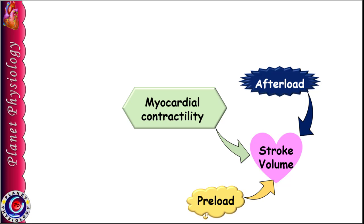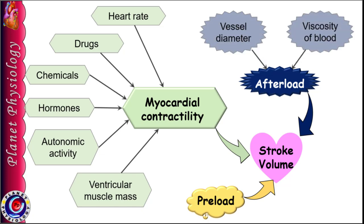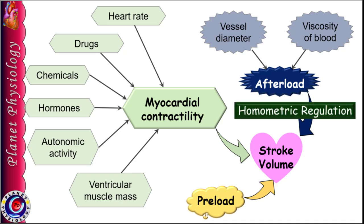To recap stroke volume determinants: stroke volume is determined by preload, myocardial contractility, and afterload. Myocardial contractility is determined by ventricular muscle mass, autonomic activity, hormones like catecholamines, thyroxine, glucagon and insulin, chemicals like hydrogen ions, carbon dioxide and oxygen levels, drugs like digitalis and barbiturates, and heart rate. Higher contractility means higher stroke volume and cardiac output. Afterload is determined by peripheral resistance — vessel diameter and blood viscosity — and more afterload means less stroke volume and cardiac output. Regulation via afterload is called homometric regulation.